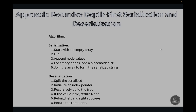The approach uses recursive depth-first search for both serialization and deserialization. For serialization: start with an empty array, perform a DFS traversal, append node values to the array, and if a node is empty add a placeholder 'N' to indicate a null node. Then join the array to form the serialized string. For deserialization: split the serialized string using the delimiter, initialize an index pointer, recursively build the tree using a helper function — if the value is 'N' return None — then rebuild the left and right subtrees recursively and return the root node.